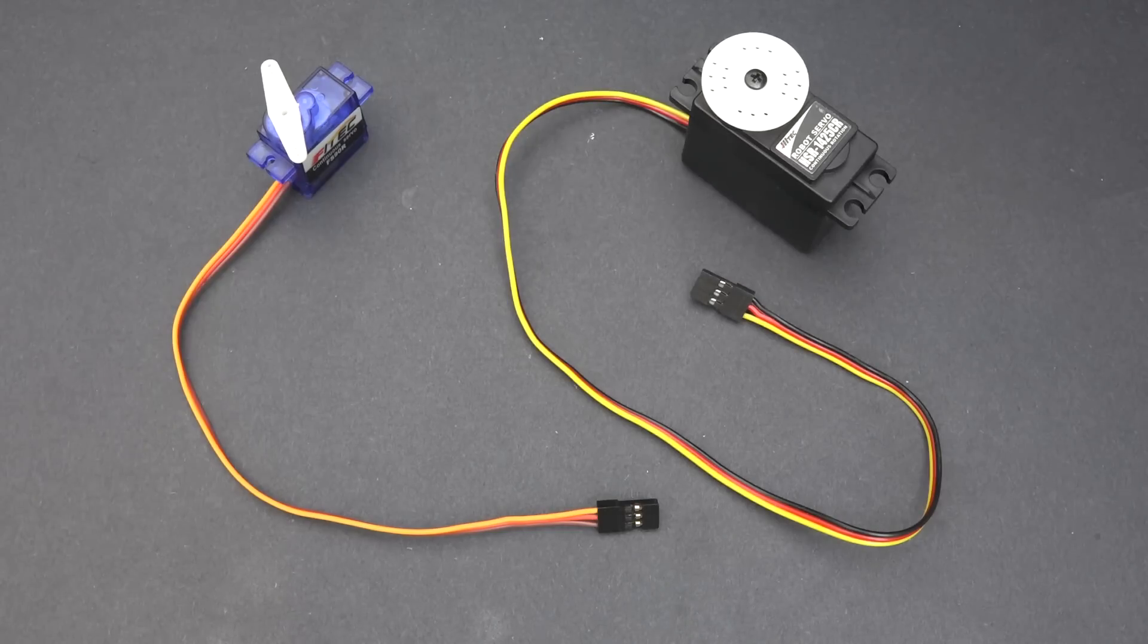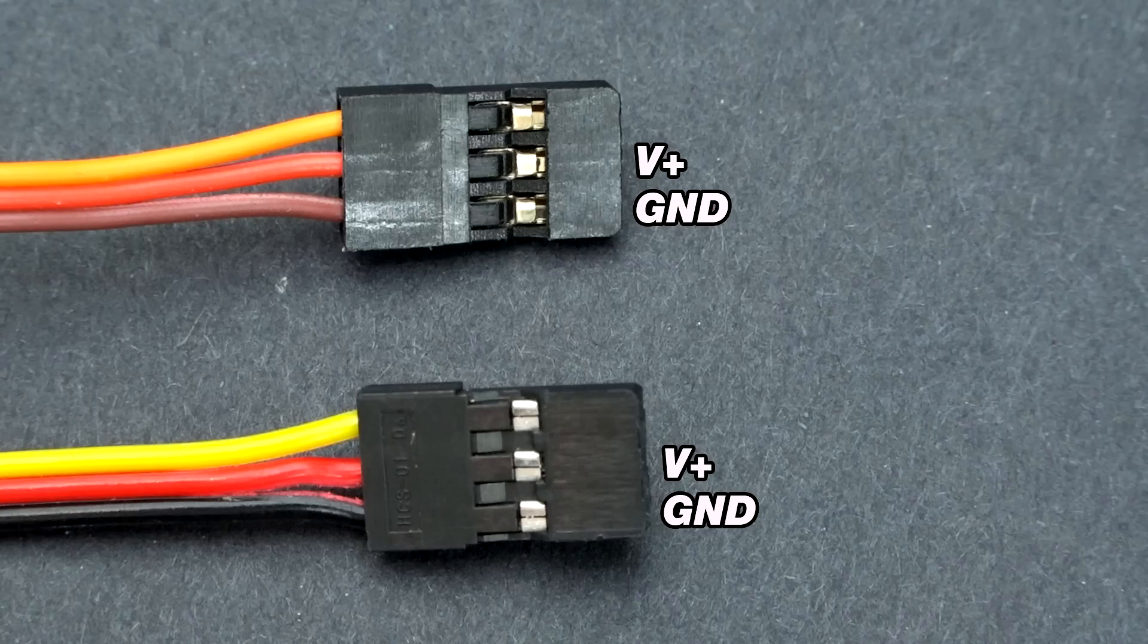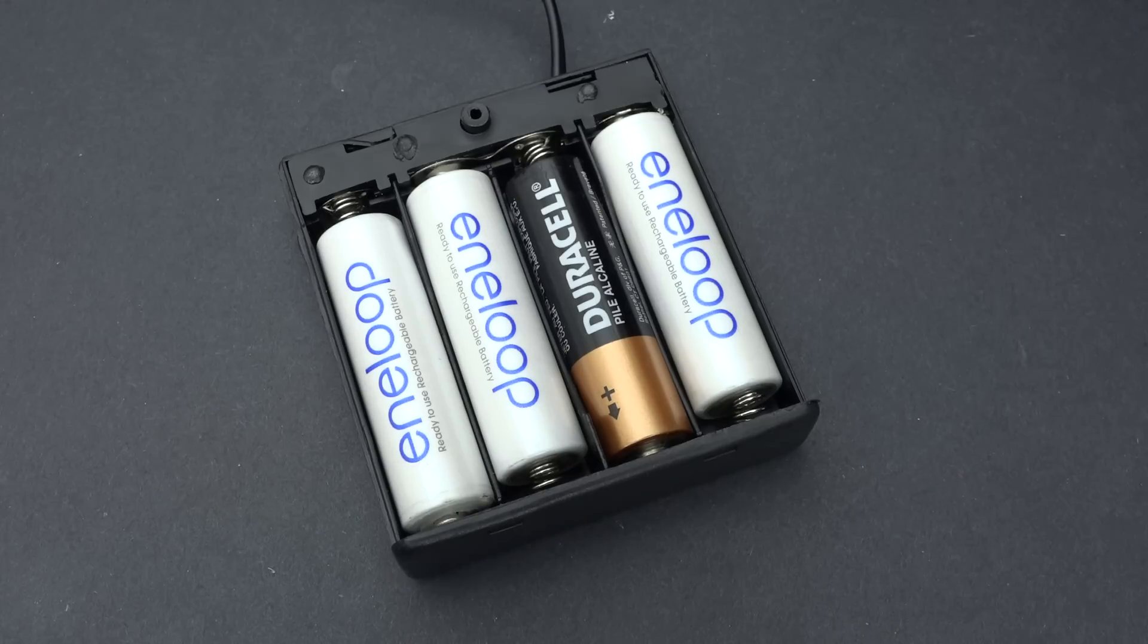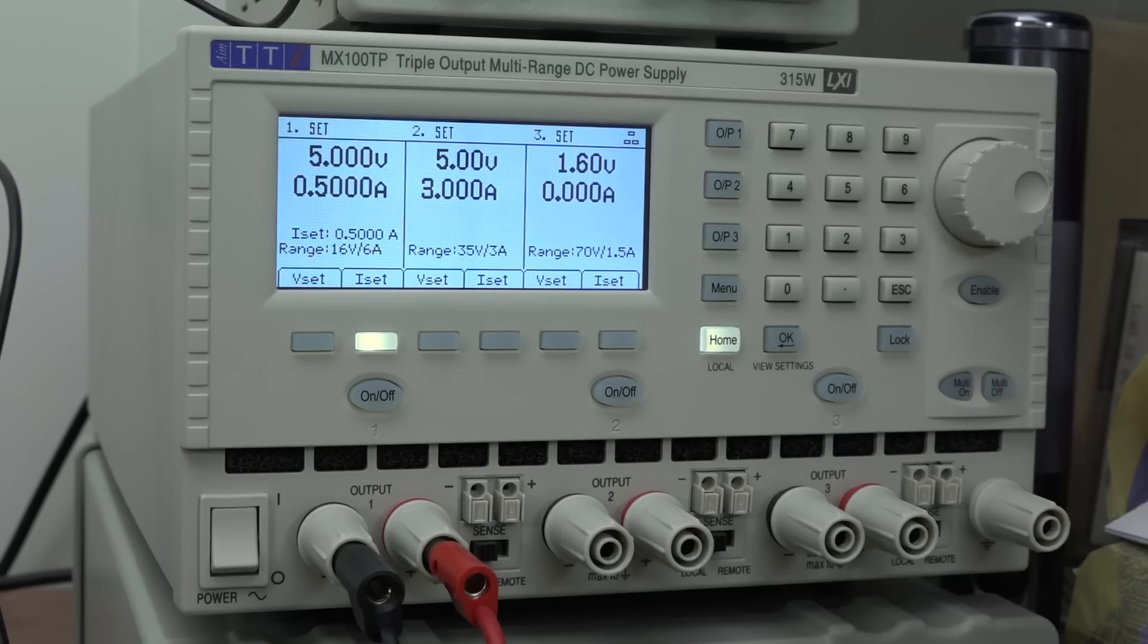Next let's talk about how to actually control a servo. In addition to horns, servos also have pigtails. I swear I'm not making this stuff up. The colors will be either orange-red-brown, or yellow-red-black. Red and brown is where you connect power to the servo, and this usually needs to be between 4.5 and 6 volts. So most people either use a 3 or 4 cell alkaline or nickel metal hydride battery pack, or sometimes people will use a 5 volt switch mode power supply. For this project I'm just going to use my bench power supply set to 5 volts.